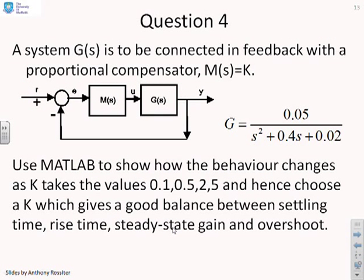Question 4. The system G is to be connected in feedback with the proportional compensator M equals K. You see G is given here as 0.05 over s squared plus 0.4s plus 0.02. Use MATLAB to show how the behaviour changes as K takes the values 0.1, 0.5, 2 and 5. And hence choose a K, which gives a good balance between settling time, rise time, steady state gain and overshoot.